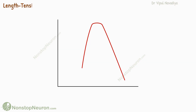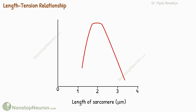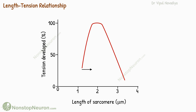Now let's see the length-tension relationship. This graph shows the initial length of the sarcomere on the x-axis. As we can see, initially with increasing length the force increases, eventually reaches the maximum, and then with increasing length the force decreases.